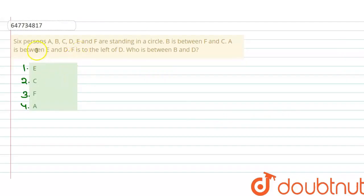Hi guys, we have a question here. Six persons A, B, C, D, E and F are standing in a circle. B is between F and C. A is between E and D. And F is to the left of D. Who is between B and D?